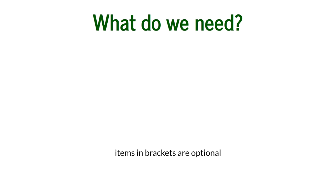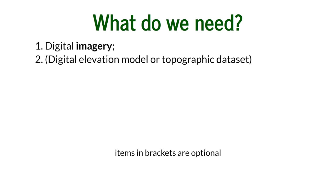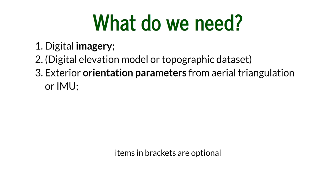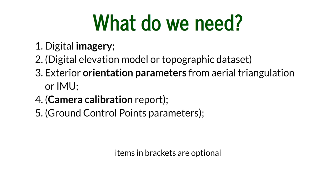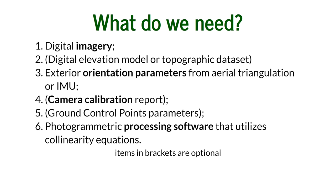Now I'll list what we needed in the past versus what we need now. We always needed the digital imagery — the pictures taken during our flight. It used to be necessary, but now it's optional, to have the digital elevation model or photographic topographic dataset. We also need exterior orientation parameters from aerial triangulation or from an inertial measurement unit, a camera calibration report, optional ground control point parameters, and we always need photogrammetric processing software that utilizes collinearity equations.